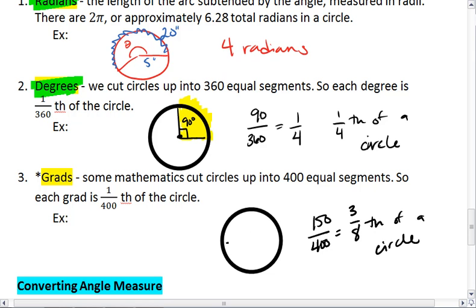So if I cut my circle into eighths, three of these makes up my 150 grads.